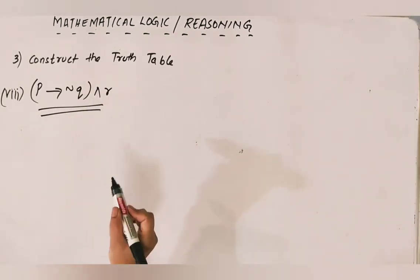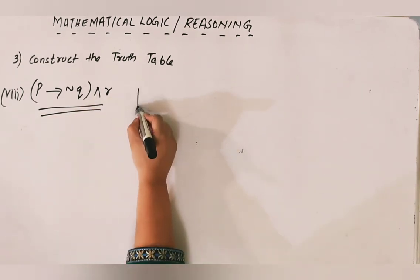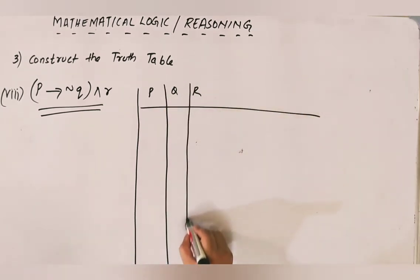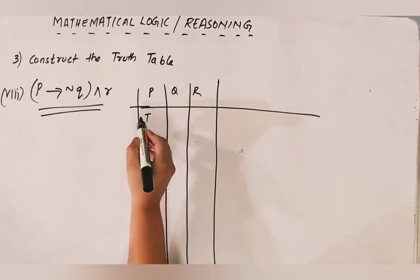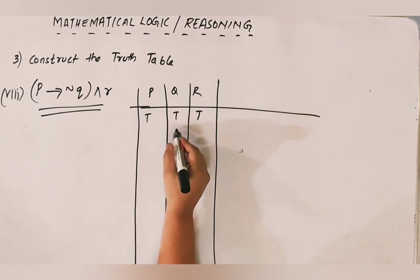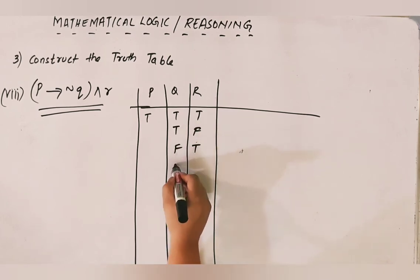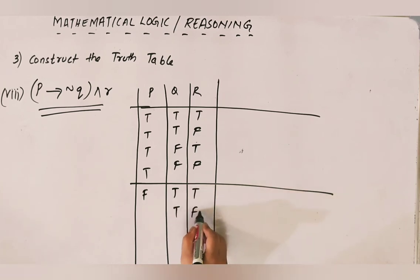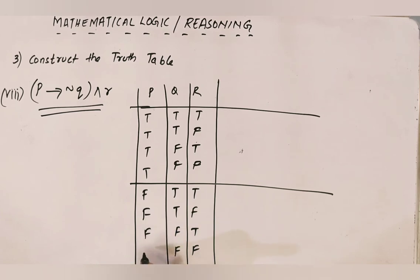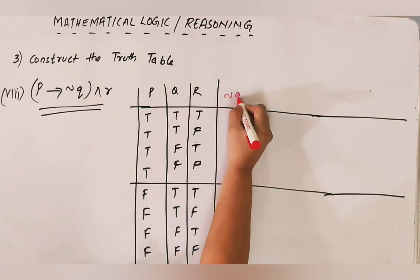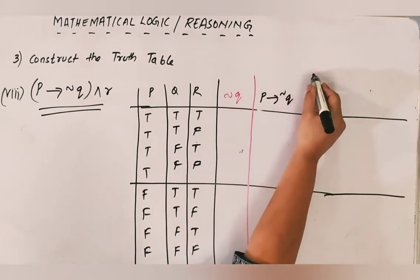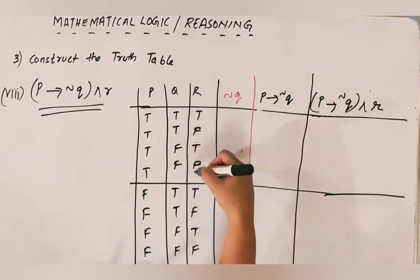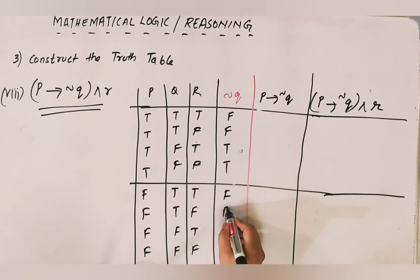Let's construct the truth table for P conditional (NOT Q) AND R with three statements P, Q, R. Write all eight combinations of truth values. First, find NOT Q — just reverse all Q values. Then compute P conditional NOT Q: remember only the TF case gives false. Find TF combinations between P and NOT Q — those rows become false, everything else true.